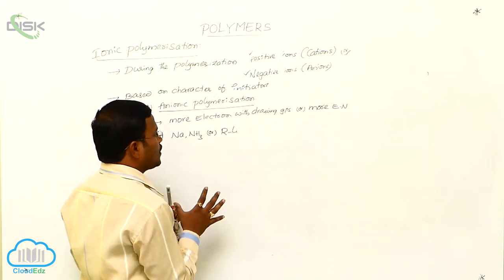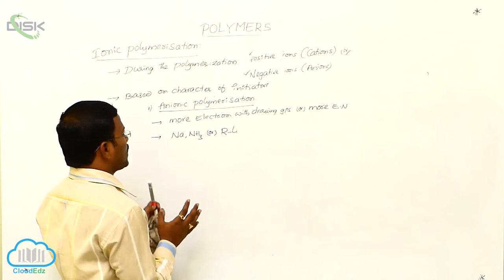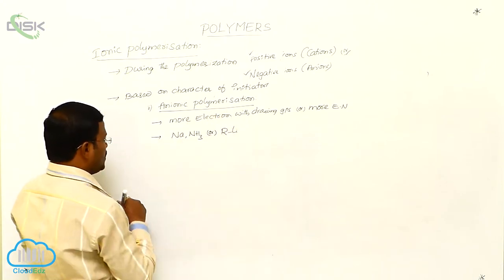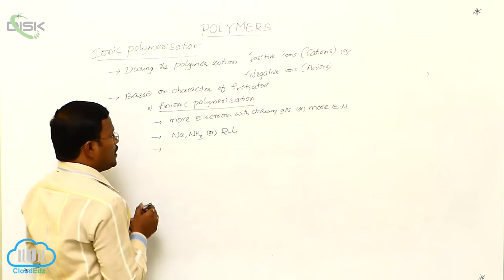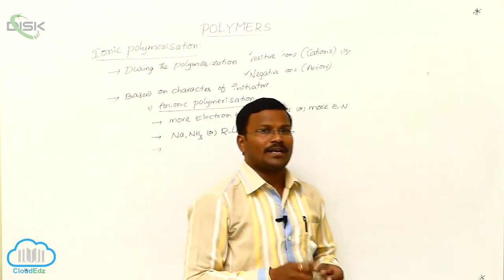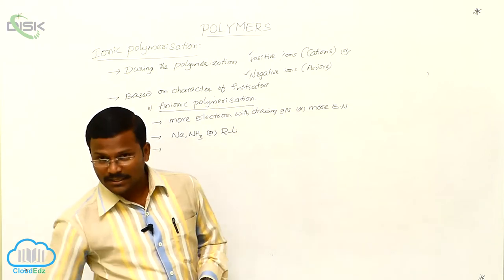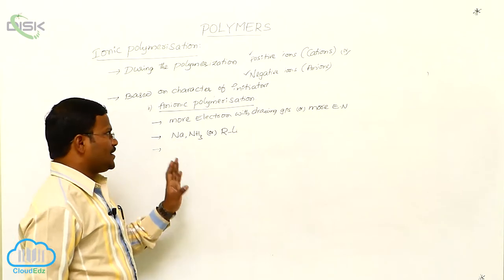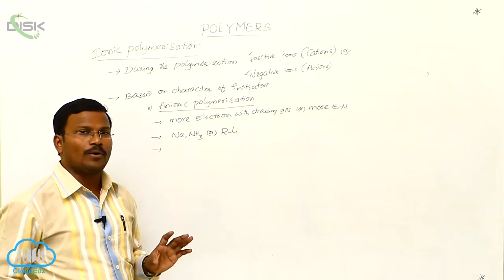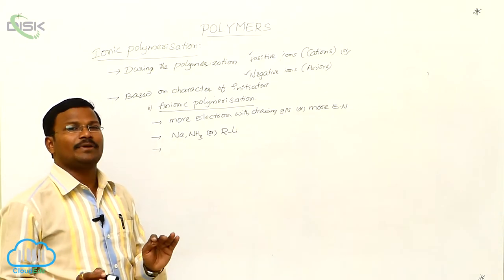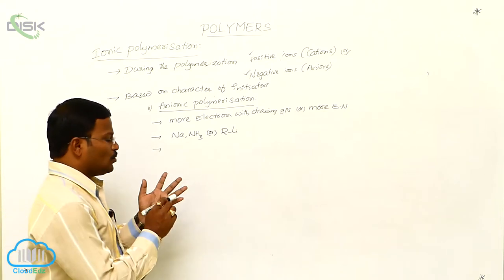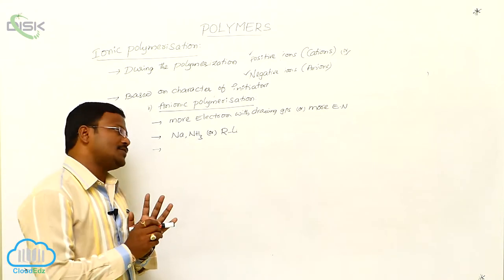Let us write: every anionic polymerization reaction completes not in three steps but only in two steps because in each anionic polymerization there is no expected chain termination step. Only two steps are included: chain initiation and chain propagation.